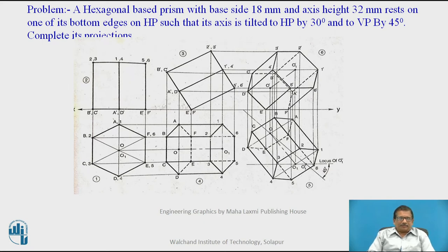In this problem, we observe a hexagonal base prism with base side 18 mm and axis height 30 mm, resting on one of its bottom edges on HP, such that its axis is tilted to HP by 30 degrees and tilted to VP by 45 degrees. Complete its projections.